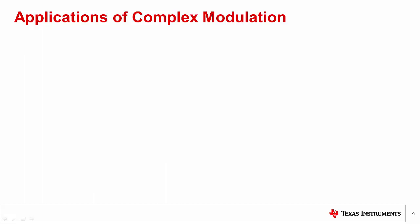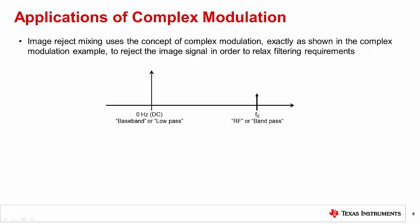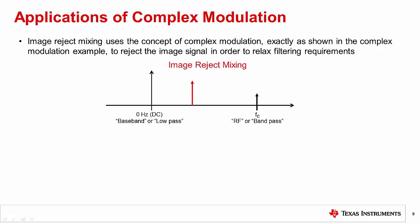Now that we've covered the basic math behind complex modulation, let's discuss the two main uses. First, the concept of complex modulation is used in image reject mixers. Where real mixing results in both a desired signal and an undesired image signal which must be filtered out, the use of complex modulation allows inherent rejection of the image signal. Rejection of the image signal relaxes the analog filter requirements after the mixer. Analog mixers are not able to achieve perfect rejection due to imperfections; however, even a 20 dB reduction in the image signal power results in a significant relaxation of filter requirements.